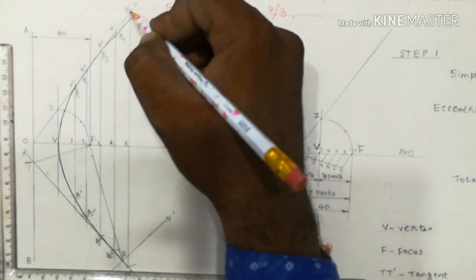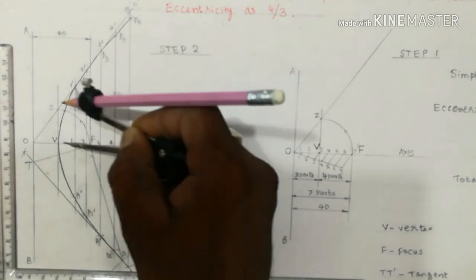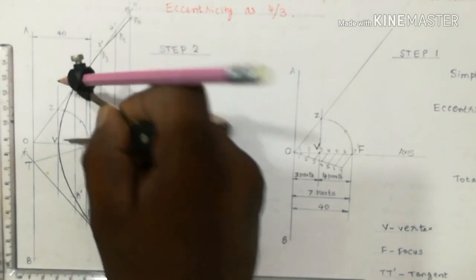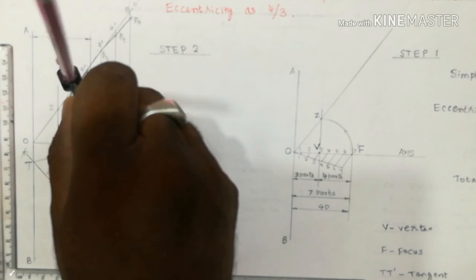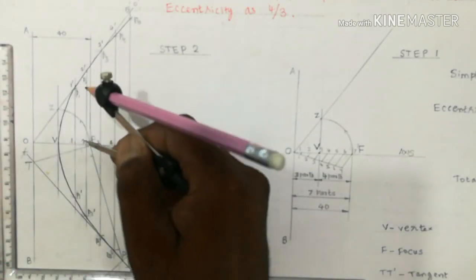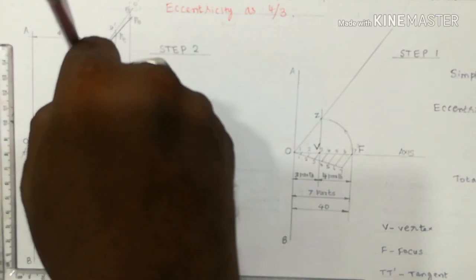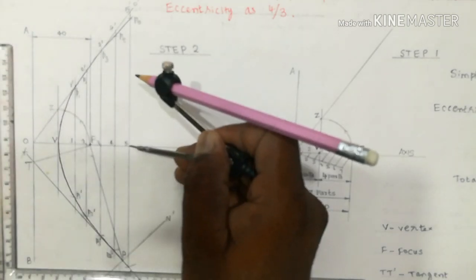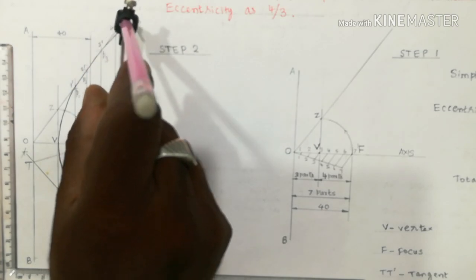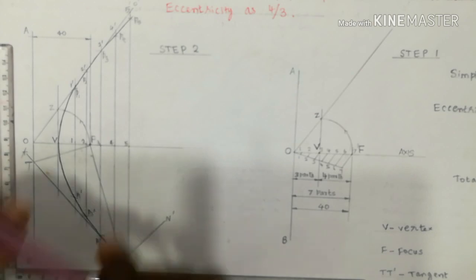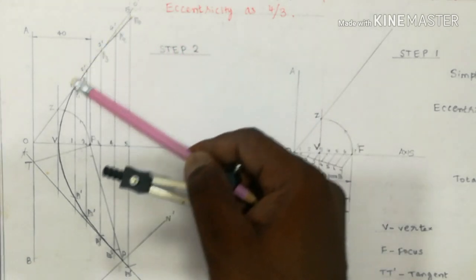Using a compass, take the vertical distance 1–1' and with F as center, cut above and below the axis on the first vertical line to get points P1 and P1'. Repeat for each vertical line using distances 2–2', 3–3', 4–4', 5–5', always keeping F as center and cutting above and below the axis. Join all the points with a smooth curve to form the hyperbola.